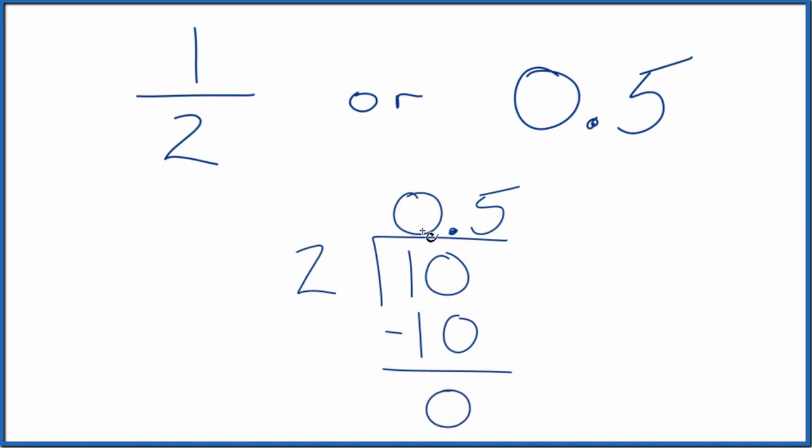So 1 divided by 2 is 0.5. And that's what we have up here. So 1 half equals 0.5. They're the same value.